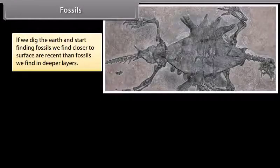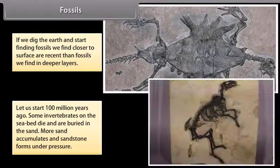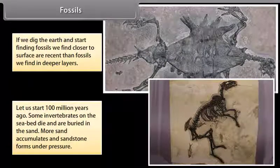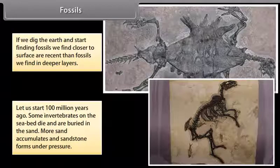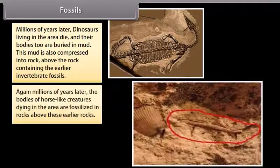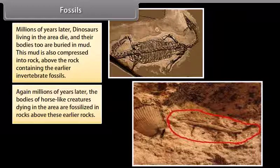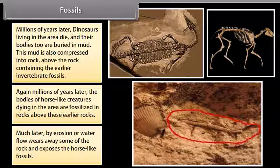If we dig the earth and start finding fossils, we find closer to the surface are more recent than fossils we find in deeper layers. Let us start 100 million years ago. Some invertebrates on the seabed die and are buried in the sand. More sand accumulates and sandstone forms under pressure. Millions of years later, dinosaurs living in the area die and their bodies too are buried in mud. This mud is also compressed into rock above the rock containing the earlier invertebrate fossils. Again, millions of years later, the bodies of horse-like creatures dying in the area are fossilized in rocks above these earlier rocks. Much later, erosion or water flow wears away some of the rock and exposes the horse-like fossils.